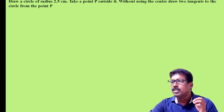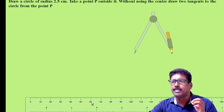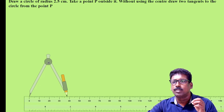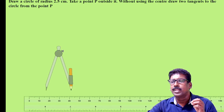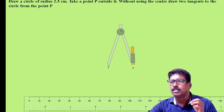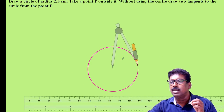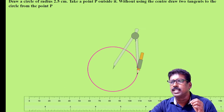First, draw a circle of radius 2.5 cm. So take 2.5 cm on your scale or ruler and draw a circle. Let me draw a circle of radius 2.5 cm.